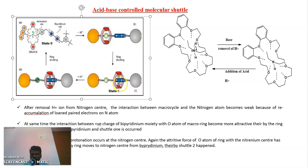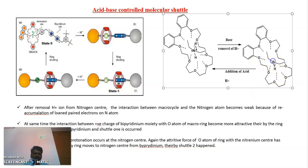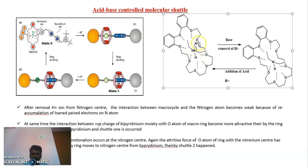Now again you protonate. If you protonate, that lone pair of electrons of this nitrogen has been consumed by H⁺, and again the positive charge has been retained on the nitrogen. That means the ammonium side is again created now — nitrogen positive charge is now again created.